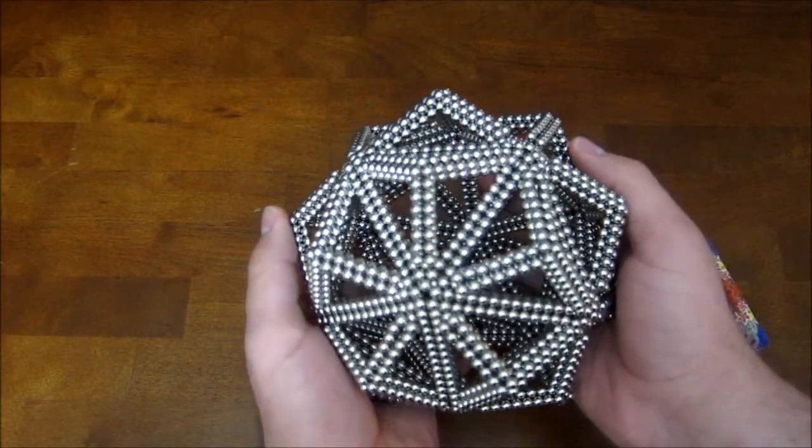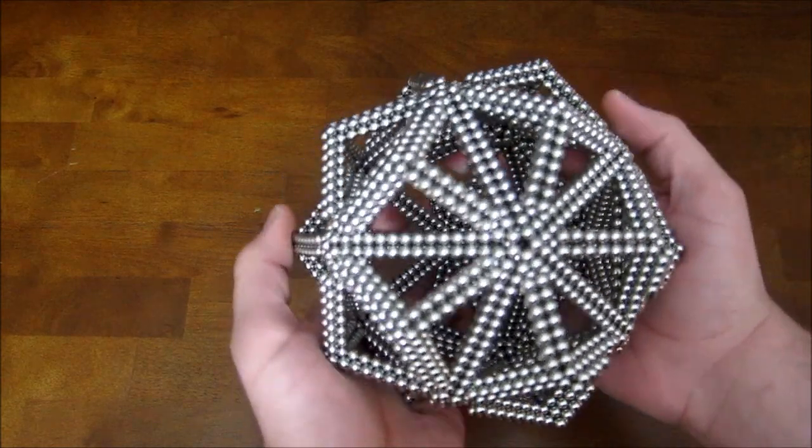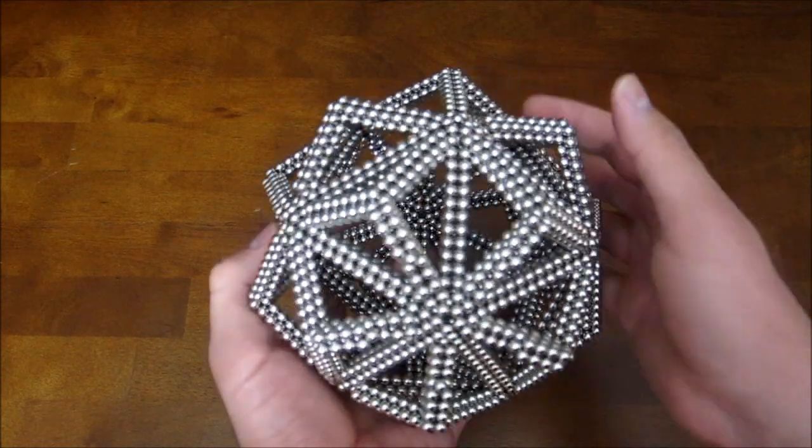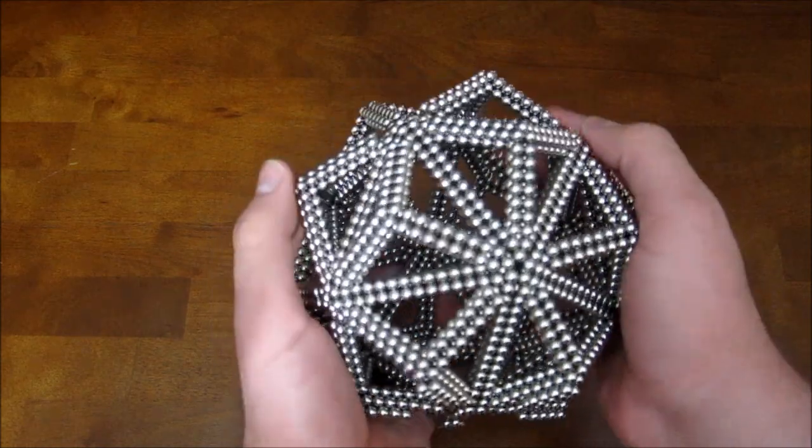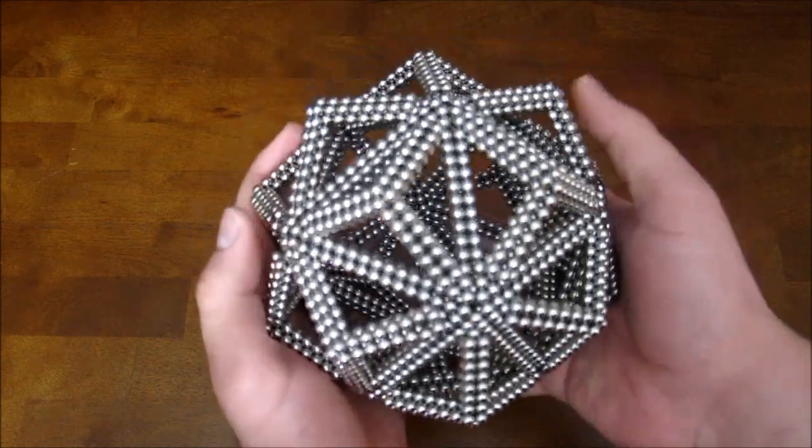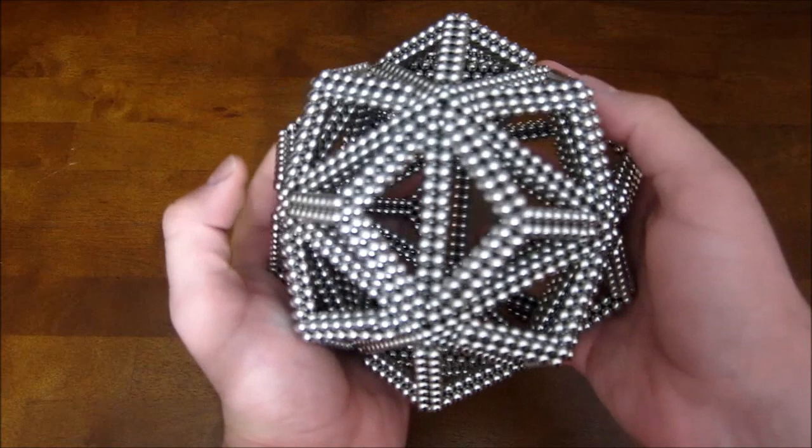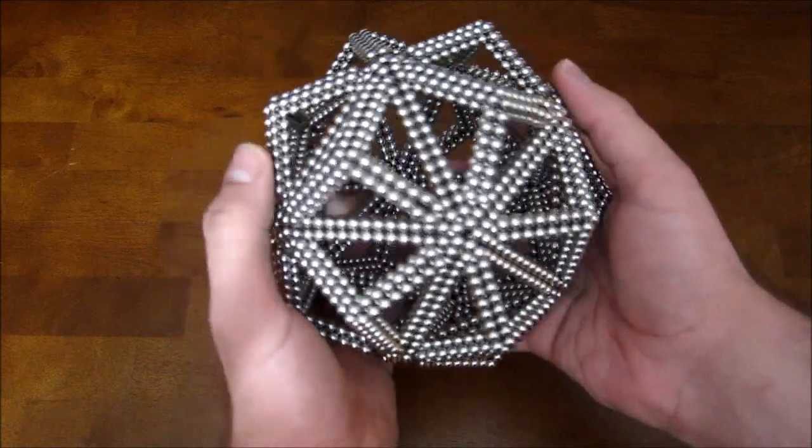And there you go. That is the small triambic icosahedron. Pretty simple to make as far as my tutorials go. And that's all there is to it. So I guess I will smash it now.